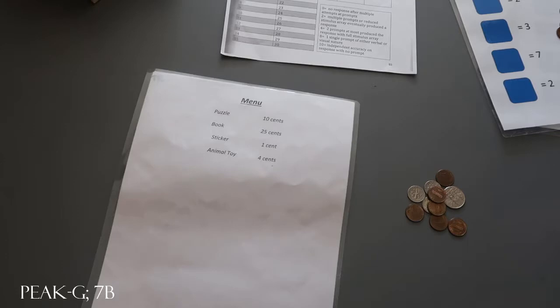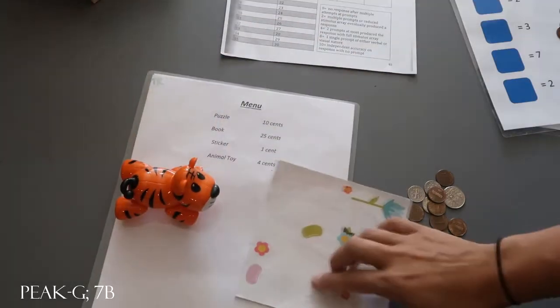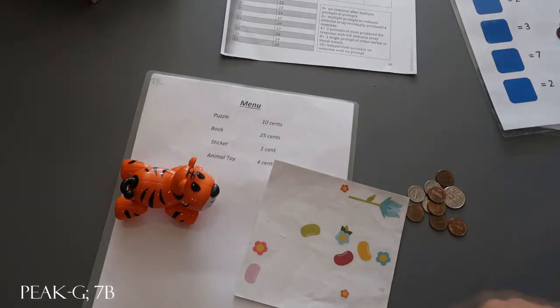So in this example we used the same four items, but they were priced one way on the train side and a different price on the test side. And then we just went ahead and found those real items for that kiddo to purchase.